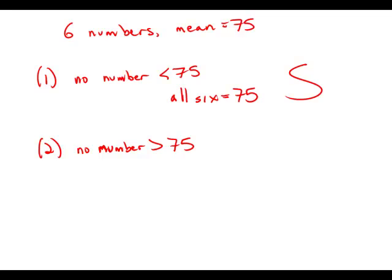Any time you have numbers above the mean, you must also have numbers below the mean and vice versa. And if you know that you have no numbers below the mean, that automatically means you cannot have any numbers above the mean. So this statement is also sufficient.